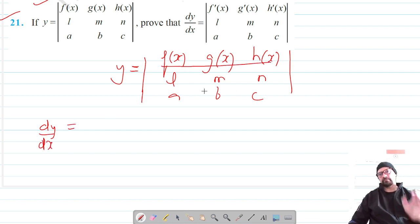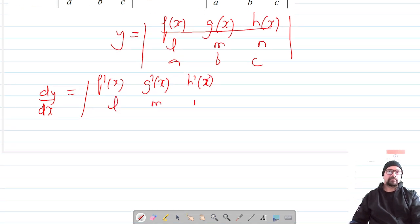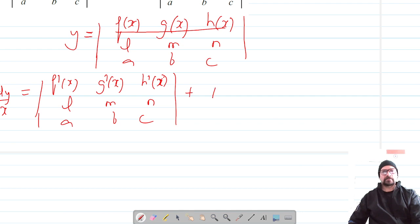So this would be: differentiation of the first row gives f'(x) g'(x) h'(x), and this is l m n and a b c.